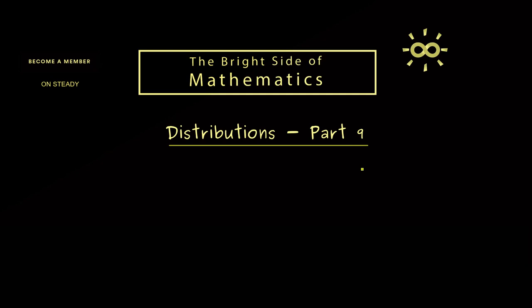Now in today's part 9, we will talk about coordinate transformations for distributions. Hence the first thing we will do is look at a linear map we call A, and it simply should map the space R^n to itself.